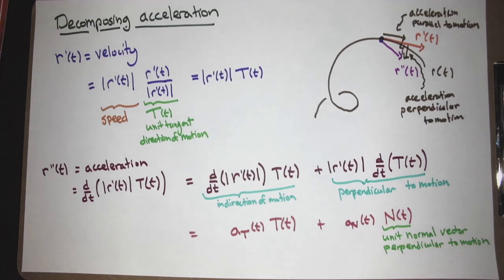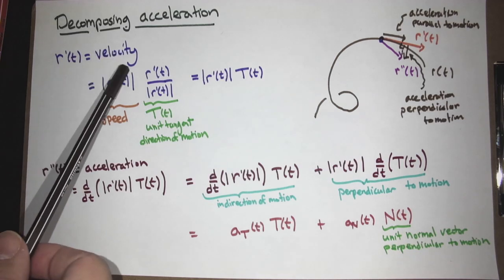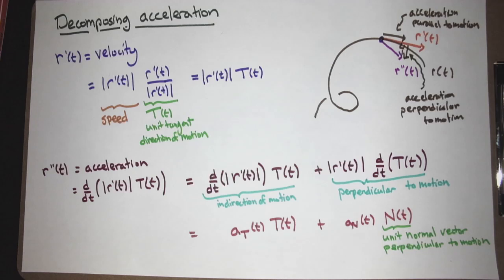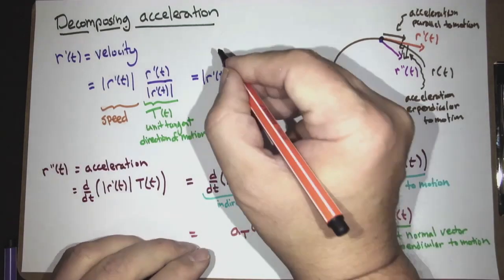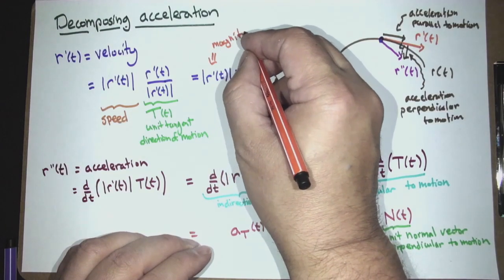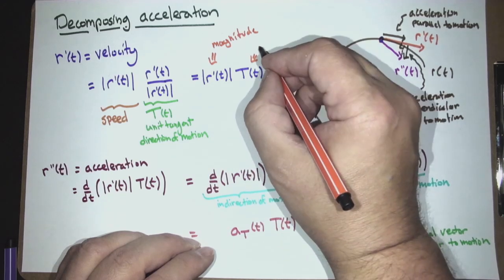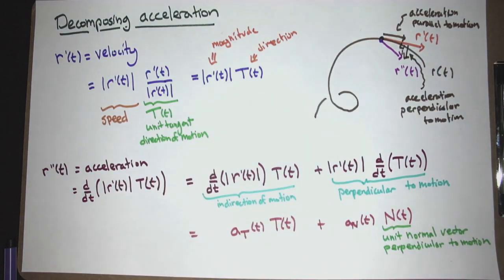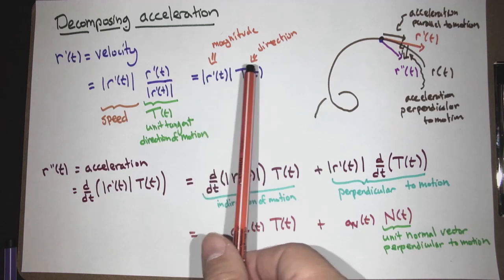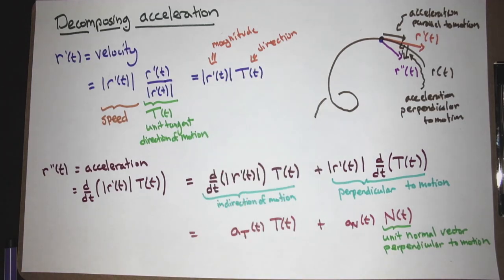We start with simple observations. R prime of t is our velocity — a vector. Every vector consists of two parts: its magnitude and its direction. So we write r prime of t as the magnitude of r prime times T of t, where the magnitude is the scalar part and T of t is a unit vector pointing in the direction of motion. Every vector can be written in this form: magnitude times direction.